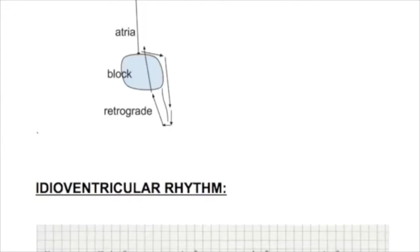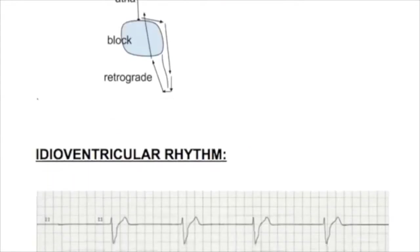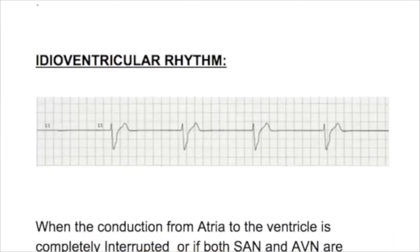Idioventricular rhythm occurs when the connection from atria to the ventricle is completely interrupted, or if both the SA node and AV node are knocked down. The ventricle then beats on its own due to automaticity at a slower rate. This is known as idioventricular rhythm.